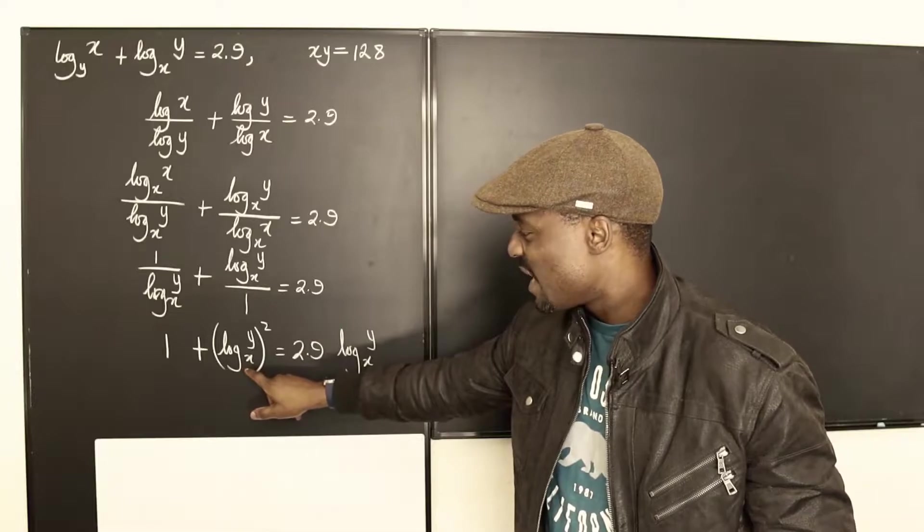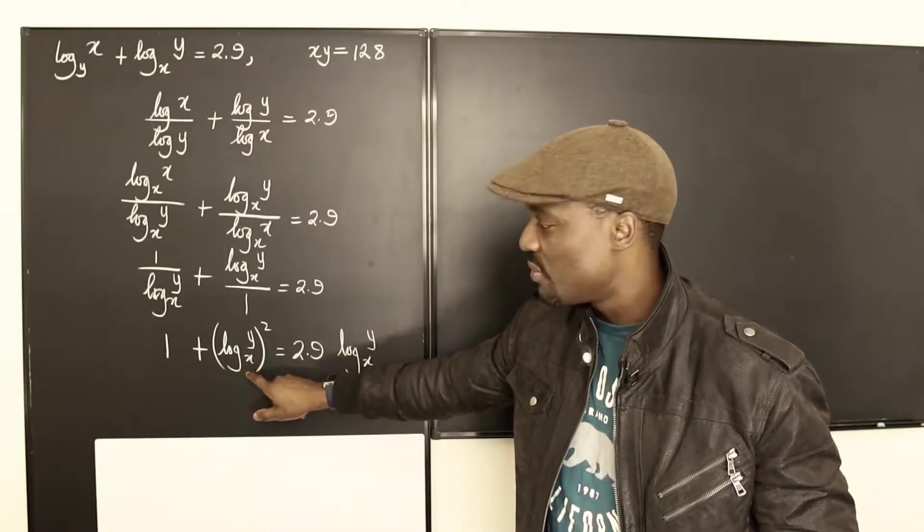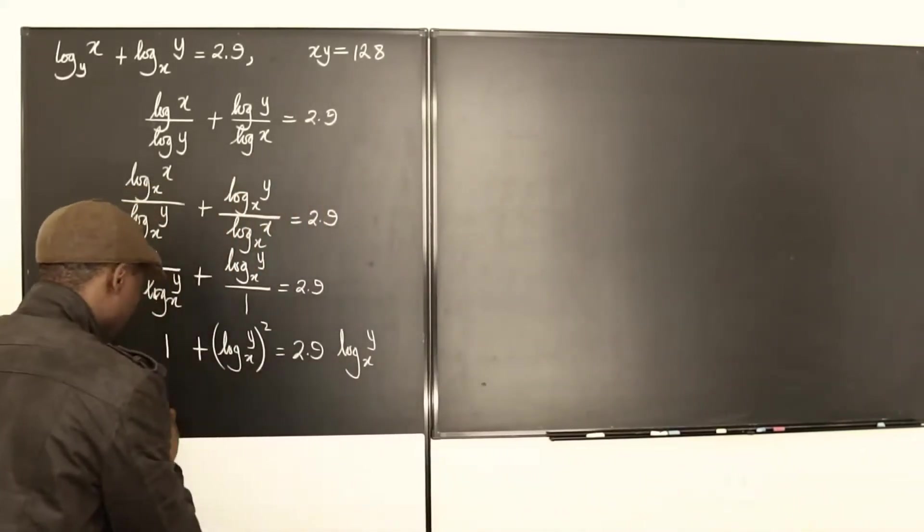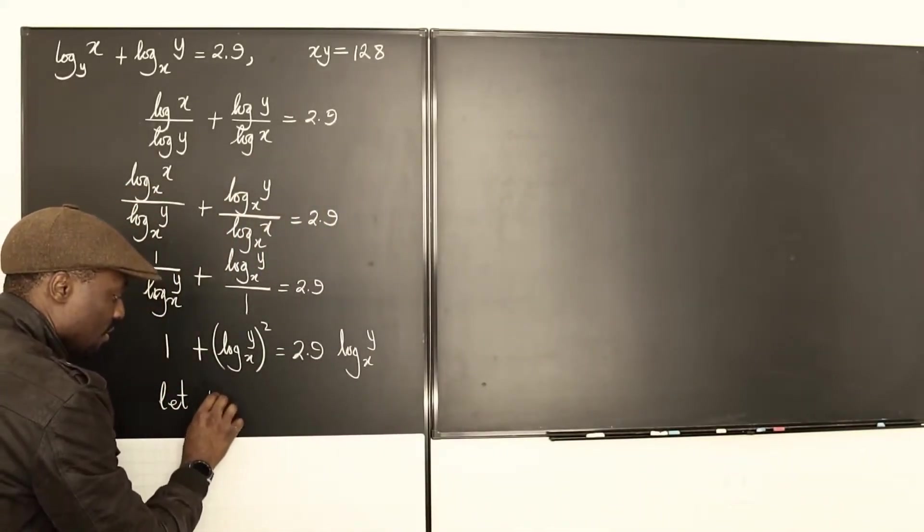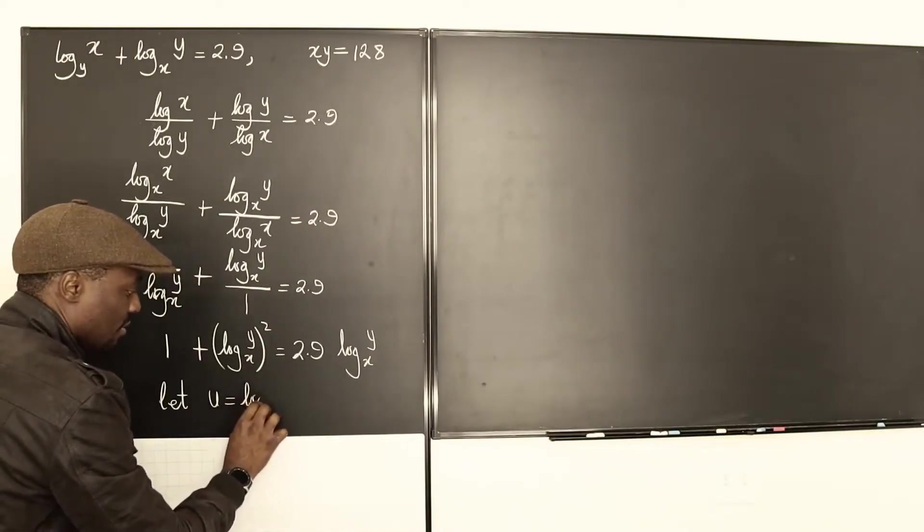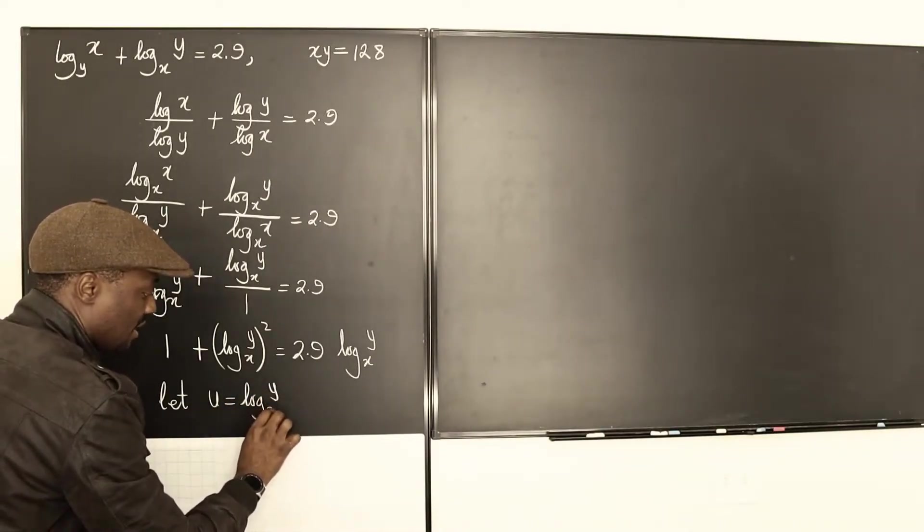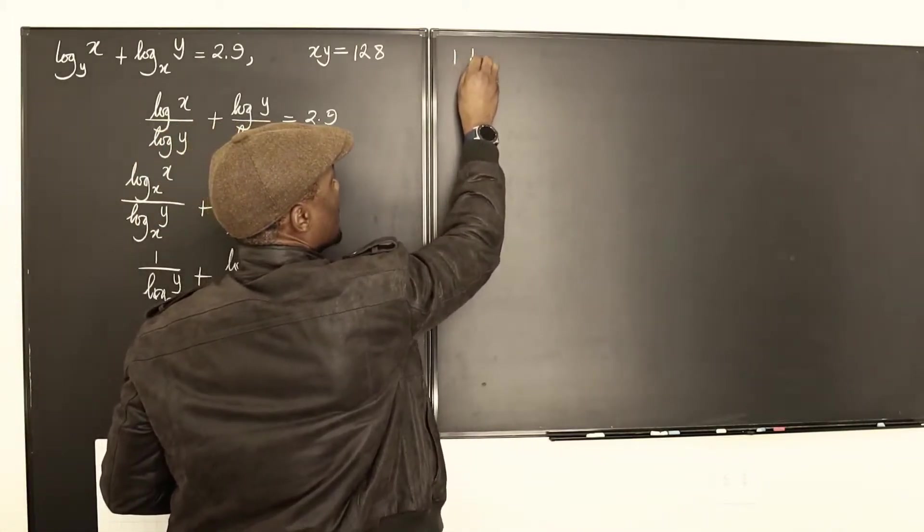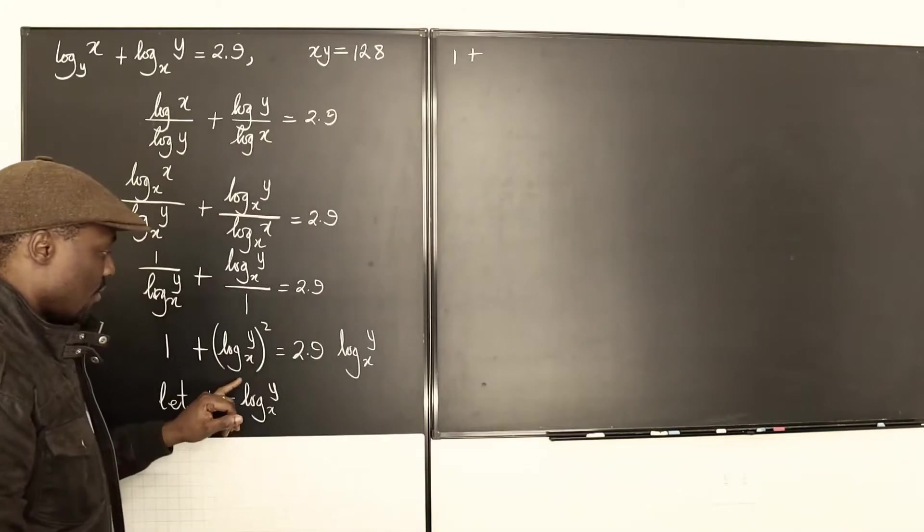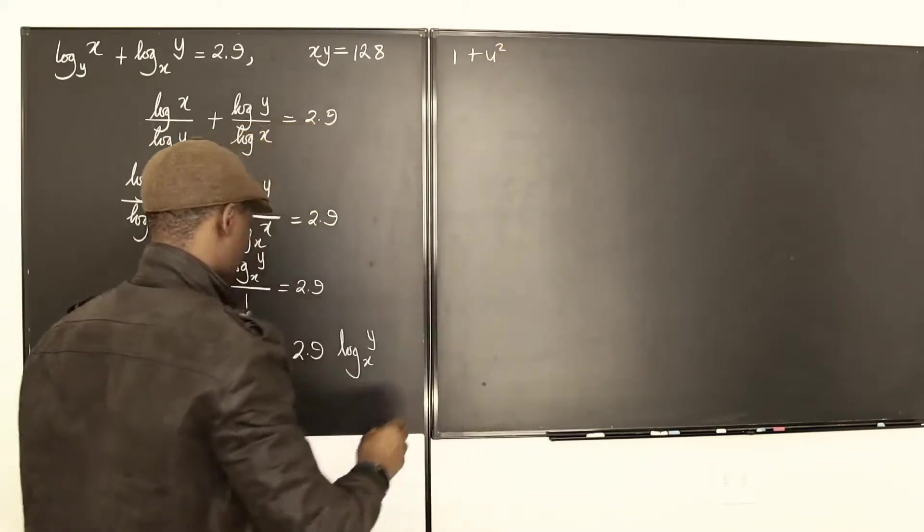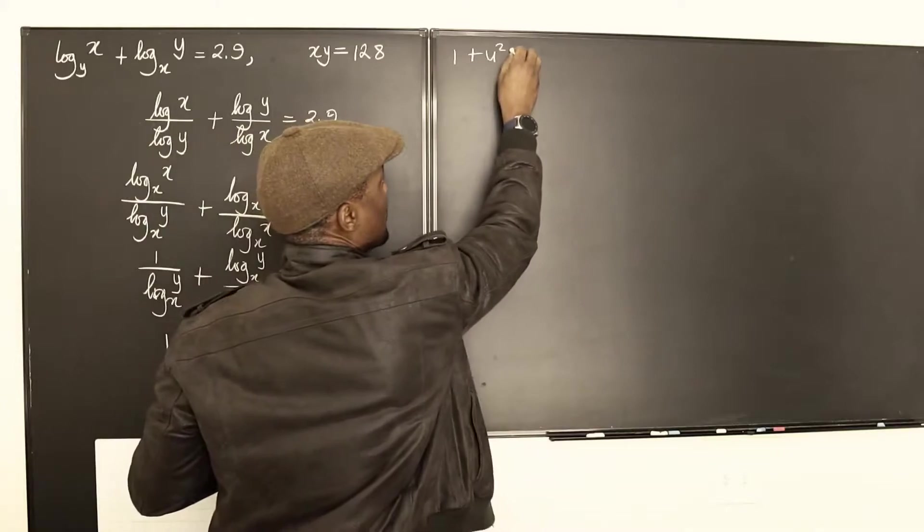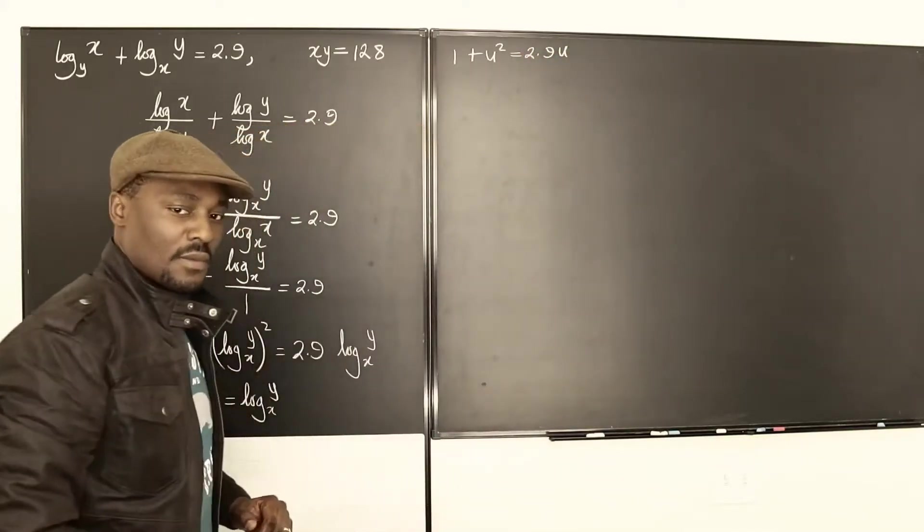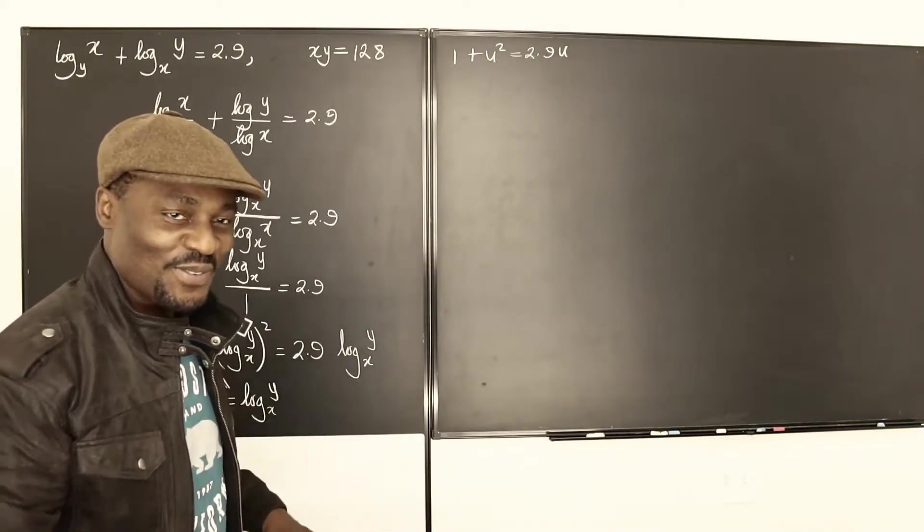If I substitute a letter, let's say u, I can put u to represent log y base x. So I can say, let u be equal to log y base x. Now if I go here, what I have will be 1 plus u squared is equal to 2.9u. This looks like a quadratic equation. So let's solve it.